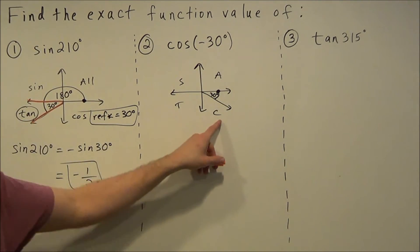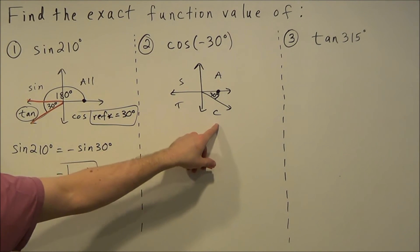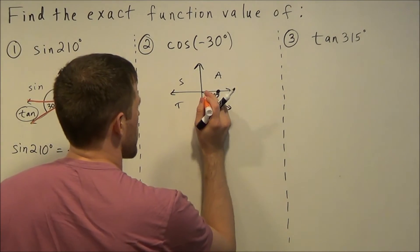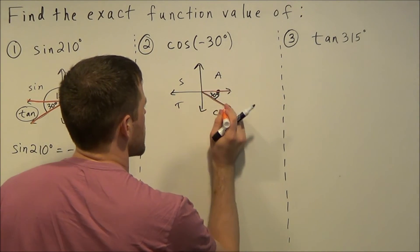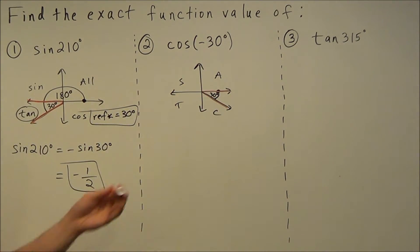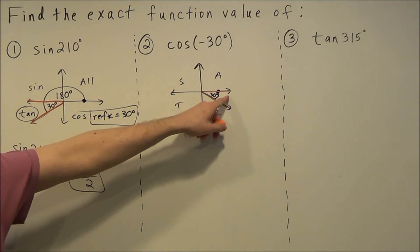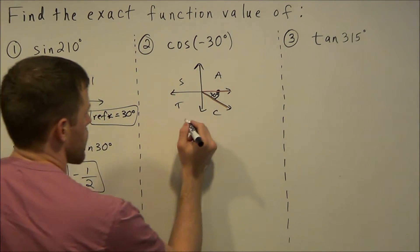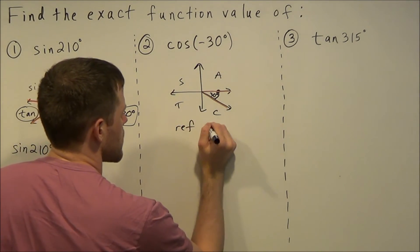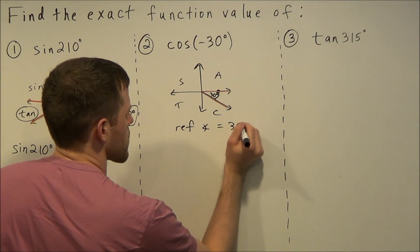If we note ASTC, we could say here that our answer is going to be positive because cosine is positive in quadrant four. We can identify our reference angle, and in this case our reference angle is given to us. We have the acute angle here of 30 degrees, so our reference angle is equal to 30 degrees.